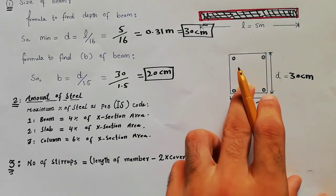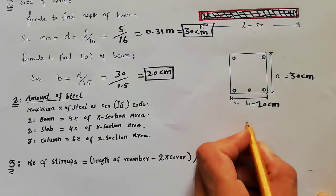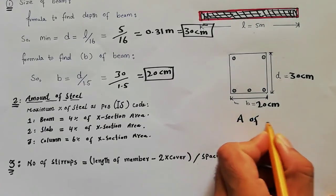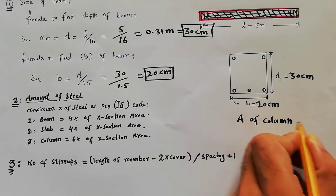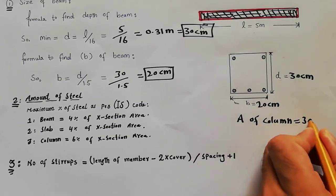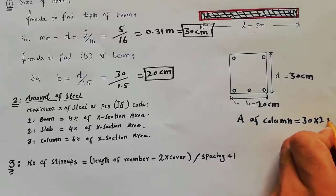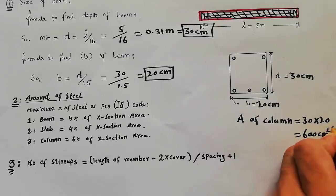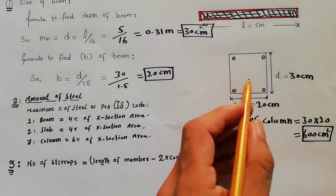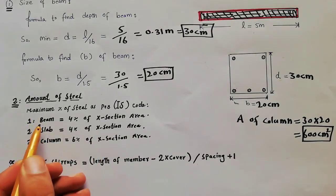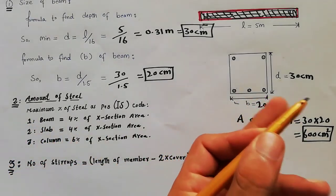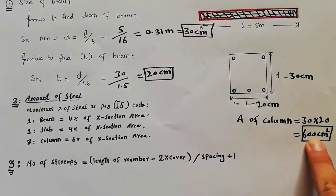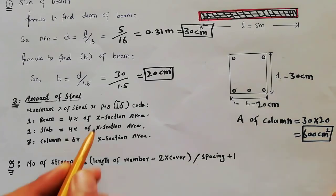To find the amount of steel for this beam, we first calculate the cross-sectional area of the beam: area = 30 cm × 20 cm = 600 cm². This is the cross-sectional area of the beam. We then apply the maximum steel percentage to find the area of steel required for this beam.